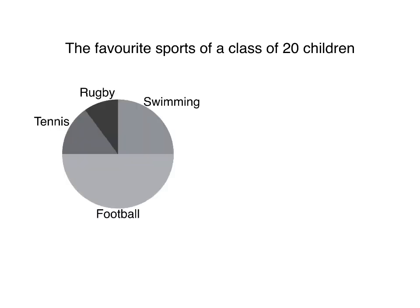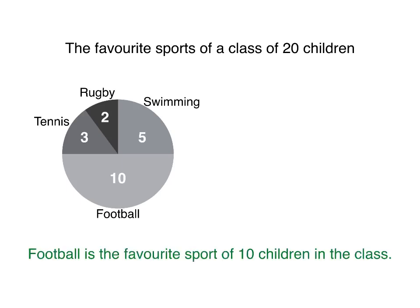We see four sports: tennis, rugby, swimming and football. The chart could show numbers of children, and we could write sentences like this one: Football is the favourite sport of 10 children in the class.